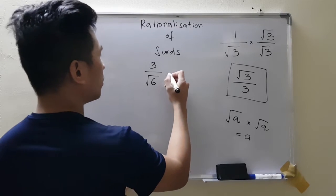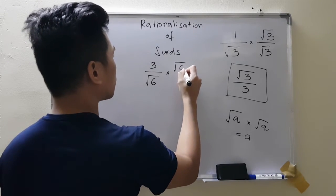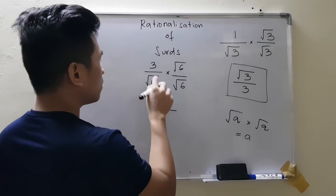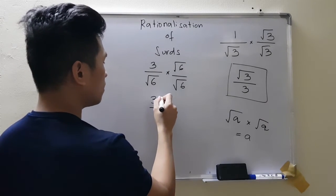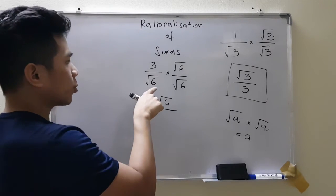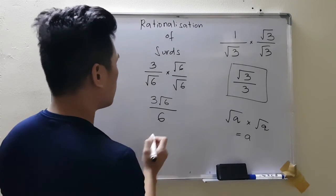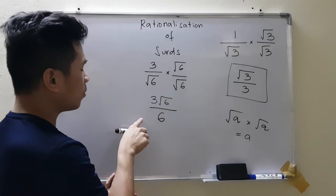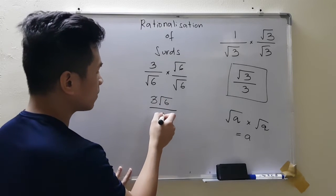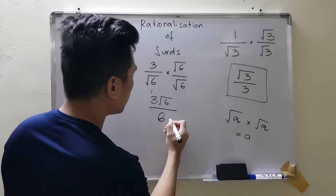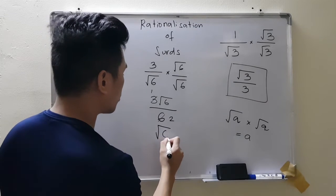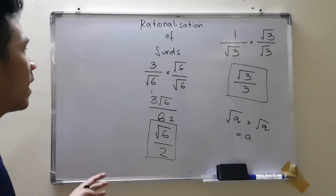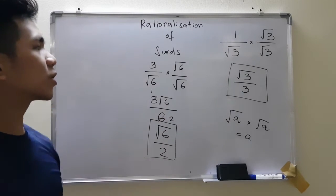For the next example, multiply both top and bottom by square root of 6. On top: 3 times root 6 gives 3 root 6. On the bottom: square root of 6 times square root of 6 is 6. Now simplify the fraction: 3 over 6 — divide both by 3, giving 1 over 2. So our answer is square root of 6 over 2. That's how you rationalize when you have a single surd as the denominator.